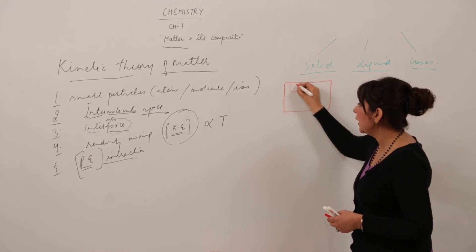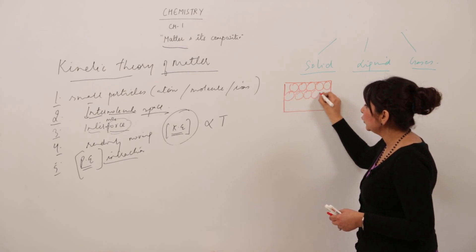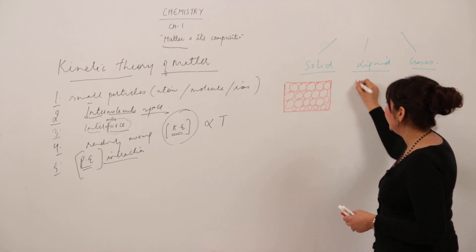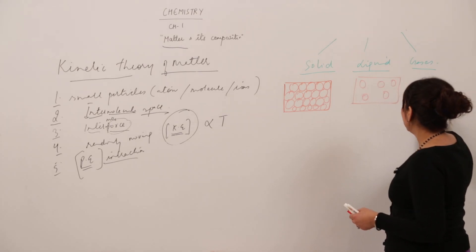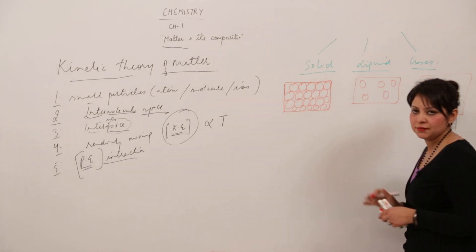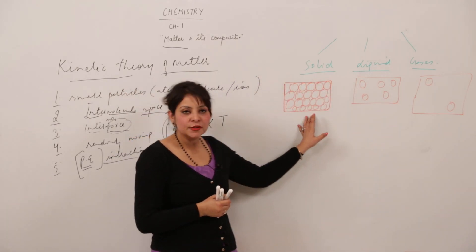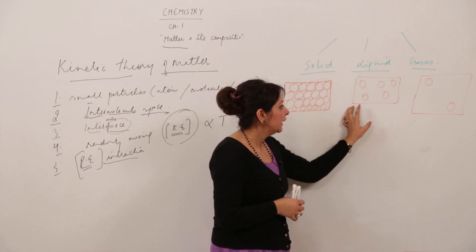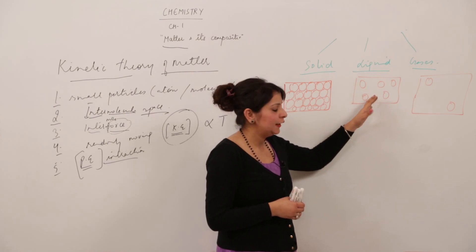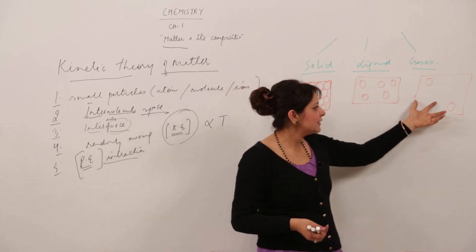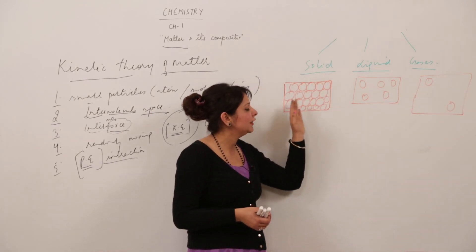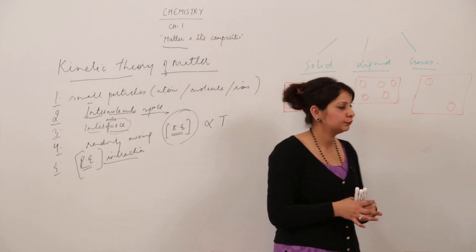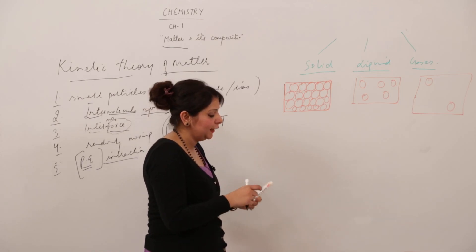In solid, as shown in the figure, the particles are closely packed with very little space between them. In liquid, there is some space between the particles. In gas, they are even further apart. In the same sample volume, we get to see many molecules in solid, only about 5 in liquid, and only 2 in gaseous state — showing they are increasingly far apart.